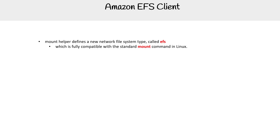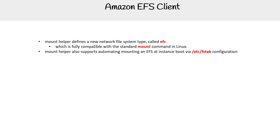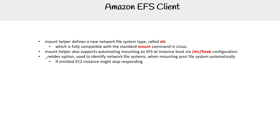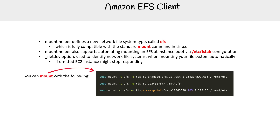Mount helper defines a new network file system type called EFS, which is fully compatible with the standard mount command in Linux. Mount helper also supports automating mounting as EFS at instance boot via /etc/fstab configuration. The net dev option is used to identify the NFS when mounting your file system automatically; if omitted, EC2 might stop responding.